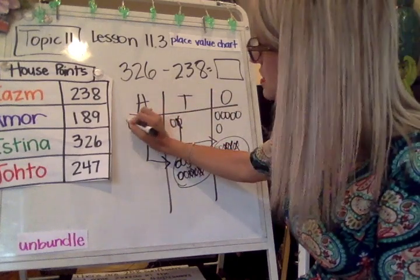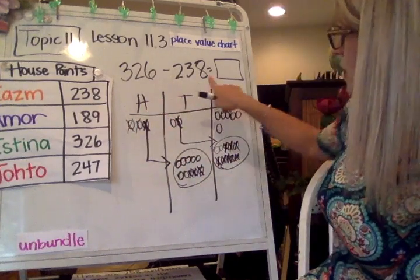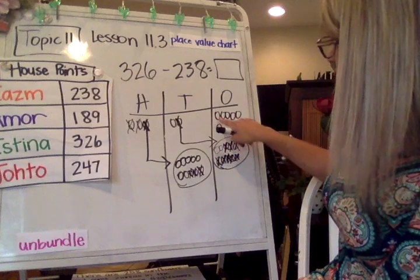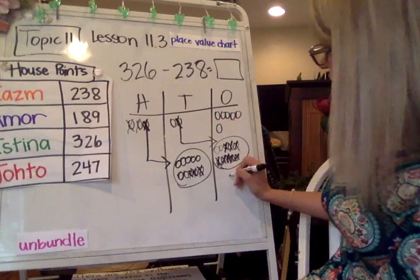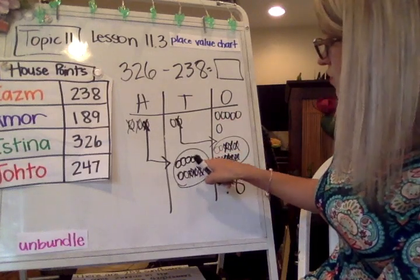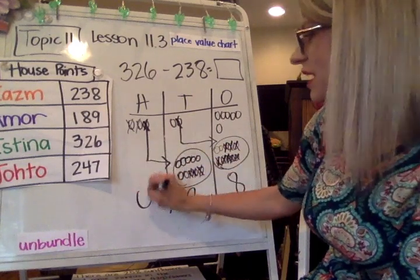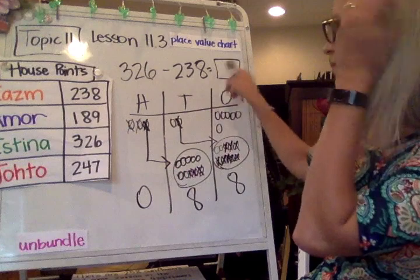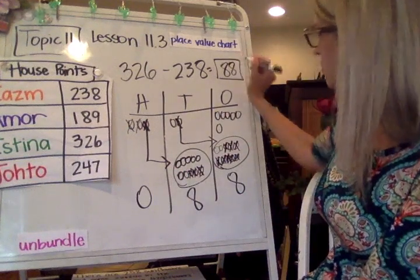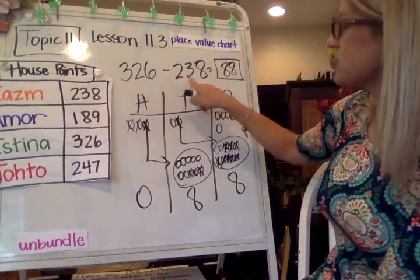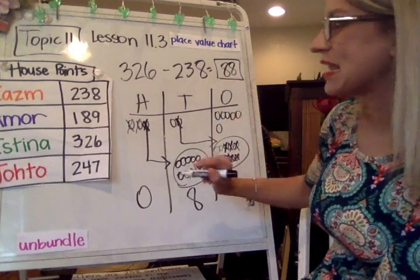Now I need to take away 2 from the hundreds. Ah, I have 0 in my hundreds place now. All right, let's check out what we have remaining. 1, 2, 3, 4, 5, 6, 7, 8. 1, 2, 3, 4, 5, 6, 7, and 8. And we don't have anything in my hundreds. I don't have to write that up here. I'm just going to write the 88. 326 minus 238 has a difference of 88.